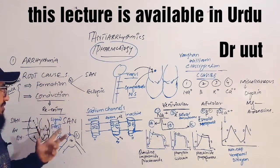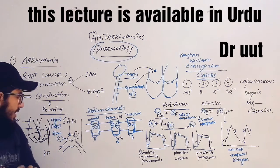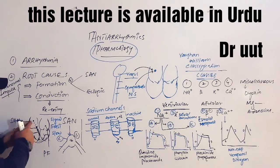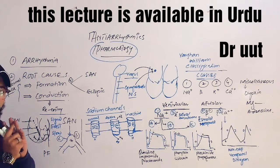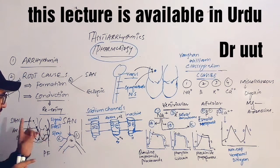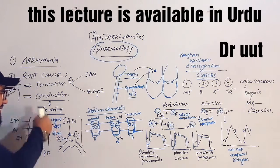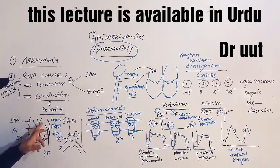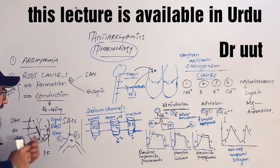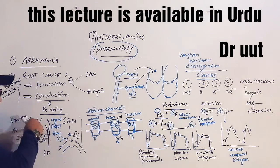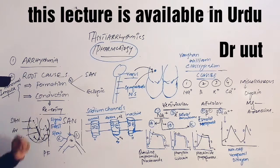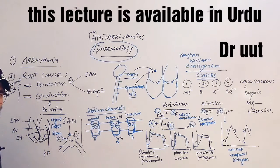Both of those are causes in the case of abnormal impulse formation. In case of conduction: when the signal reaches from the SA node to the Purkinje fibers, it is supposed to vanish. But sometimes due to abnormal conditions, the signal re-enters the atria, and from the atria it re-enters the atrioventricular node. This mechanism is called re-entry, and it again gives an impulse to the ventricles to contract, causing arrhythmia.